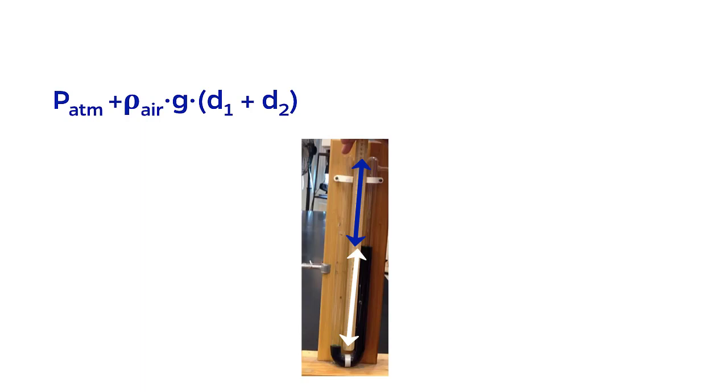On the right side, we have an applied pressure, which would be the variable we want to solve for. We also have a column of air on the right side with a height of D1. We also have a column of dark liquid on the right with a height of D2. Note that if multiple immiscible fluids are stacked on top of one another, the hydrostatic pressures are additive.